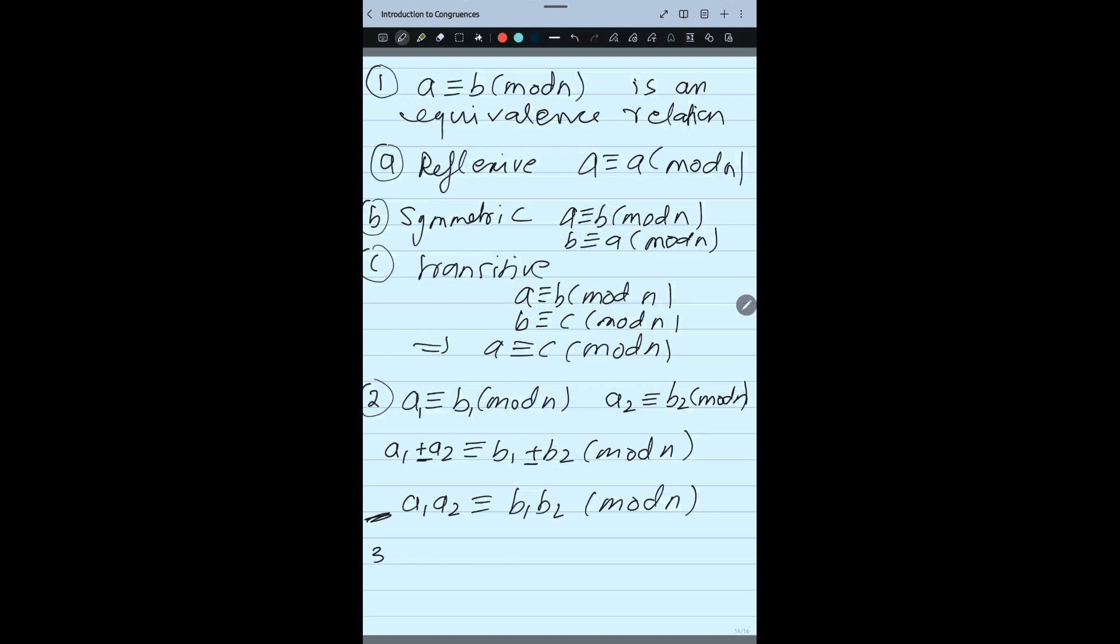The next property says that if P(x) is any polynomial and it is given that A congruent B mod N, then P(A) congruent P(B) mod N. This I will not be using much, but yes, it is a property when you will study polynomials, that time it will be required.